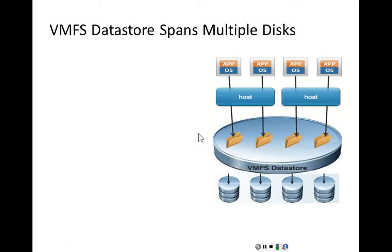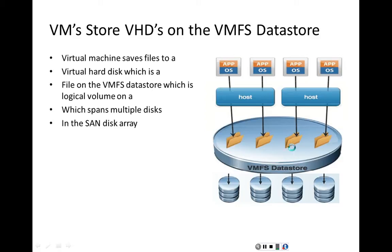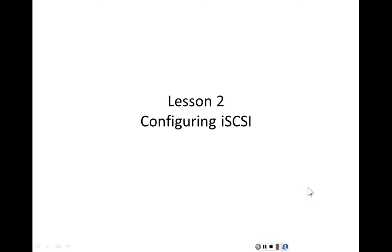A VMFS datastore spans multiple disks. Virtual machines store their virtual hard disks on the VMFS datastore. A virtual hard disk is a single file that appears to the guest operating system as if it's a physical hard disk. That file is stored on the VMFS datastore, which is a logical volume spanning multiple disks in the storage area network disk array. That's storage area network concepts.